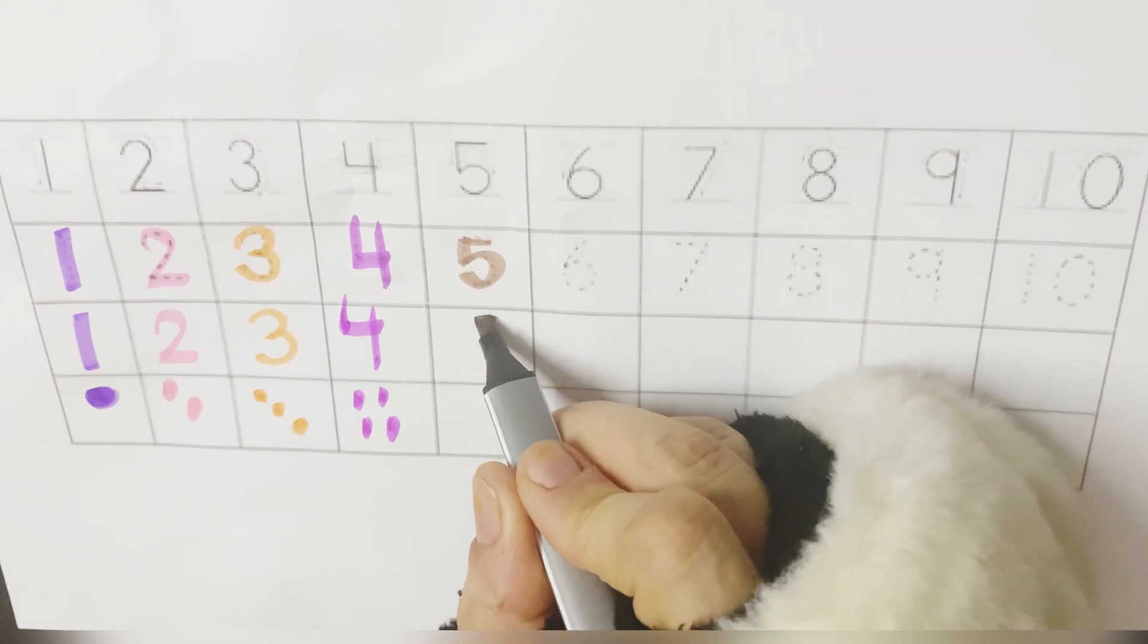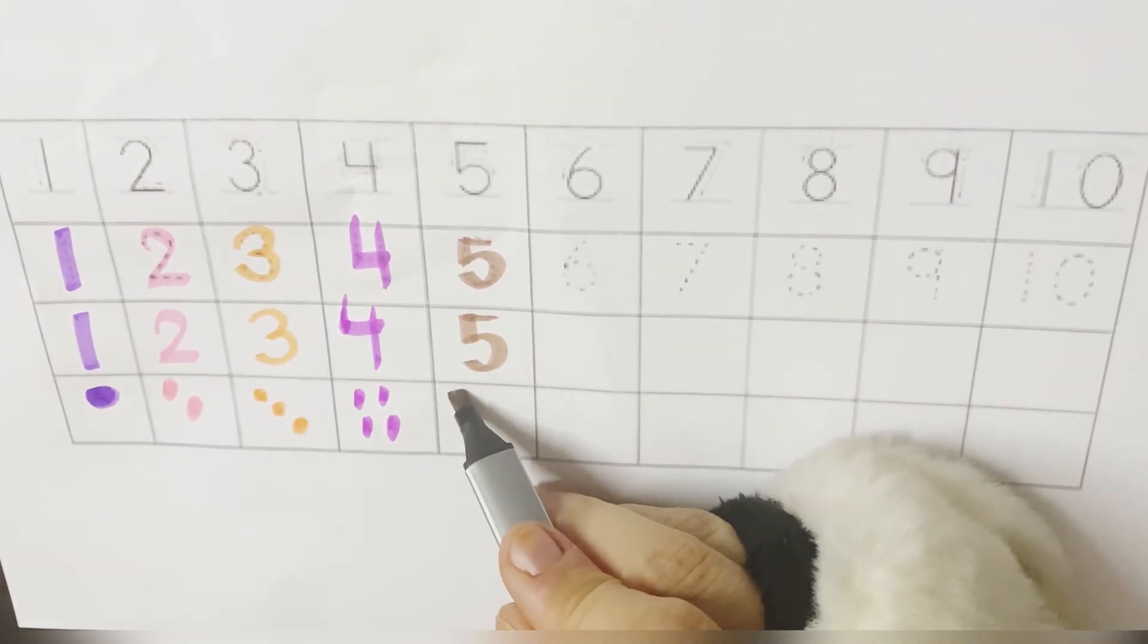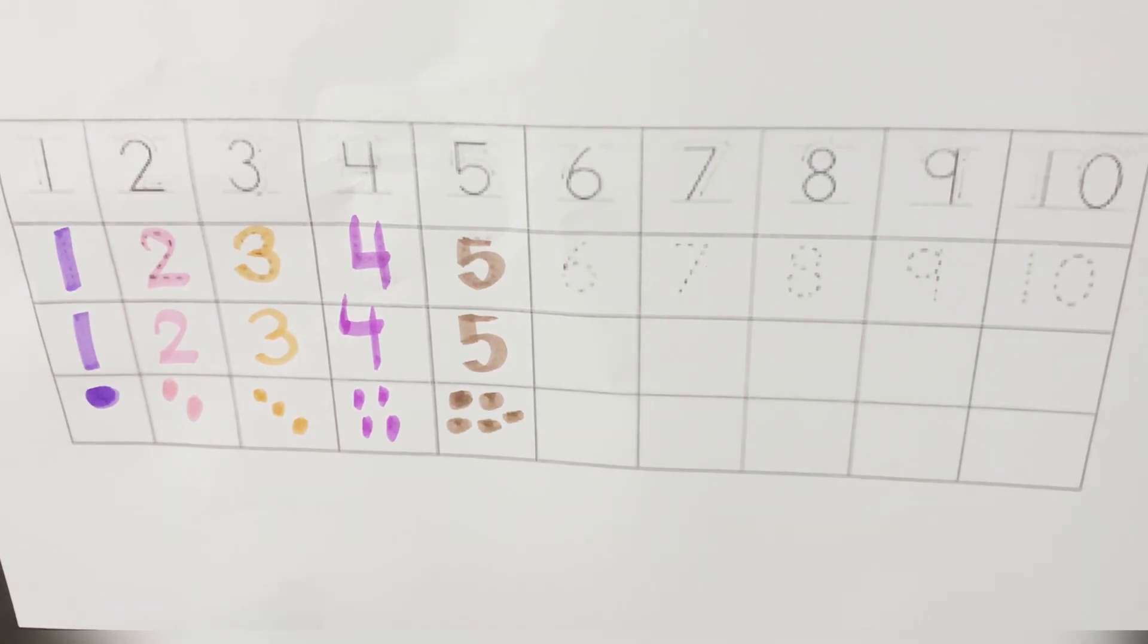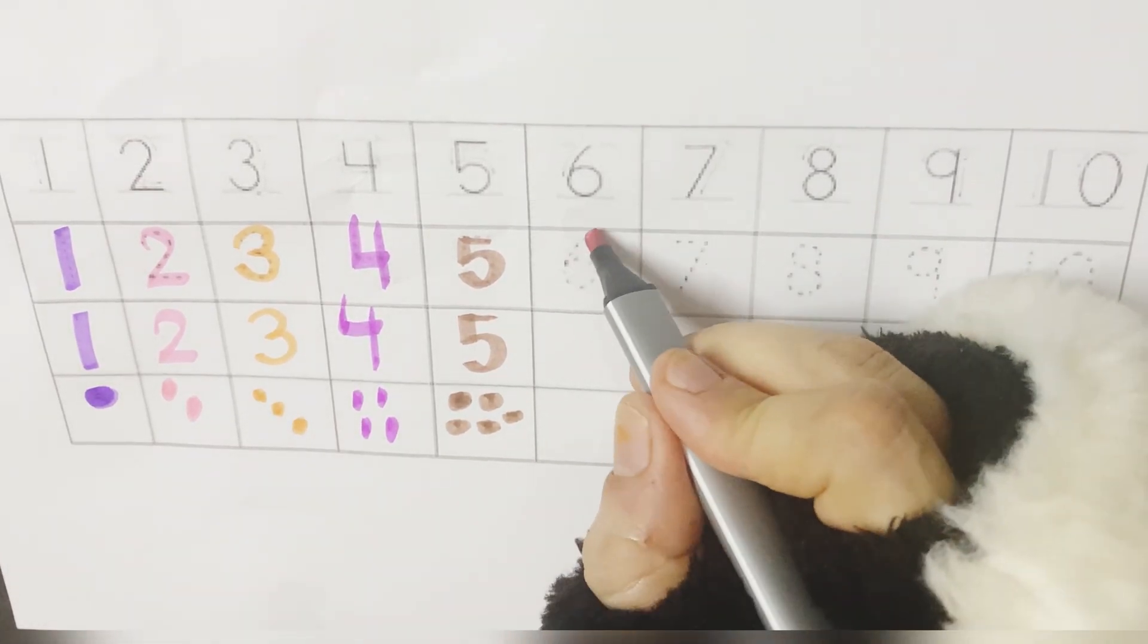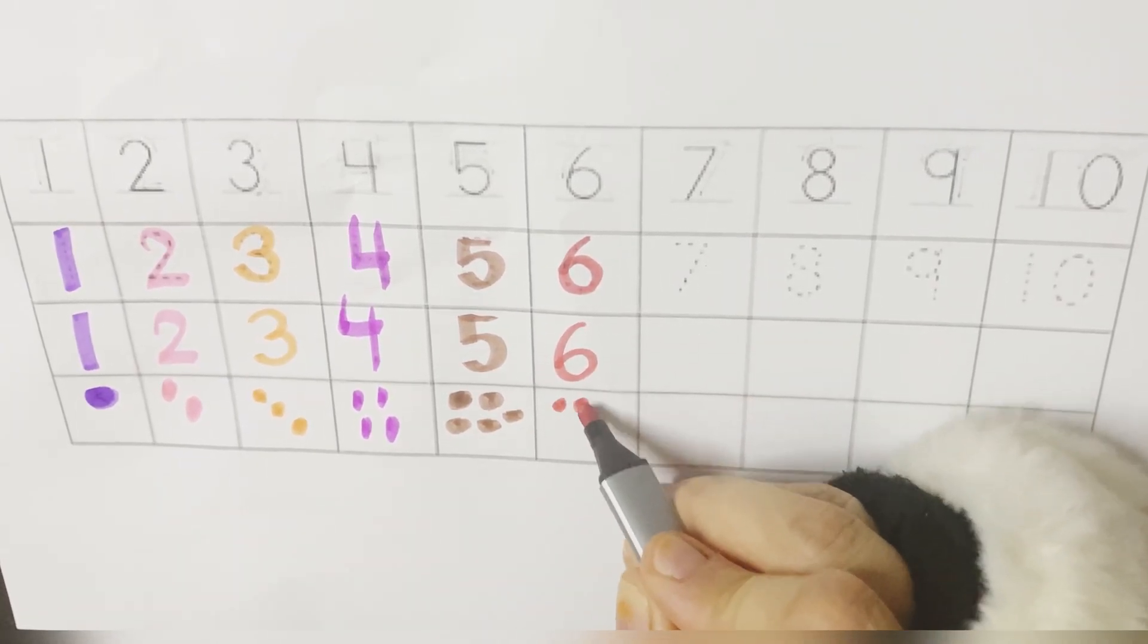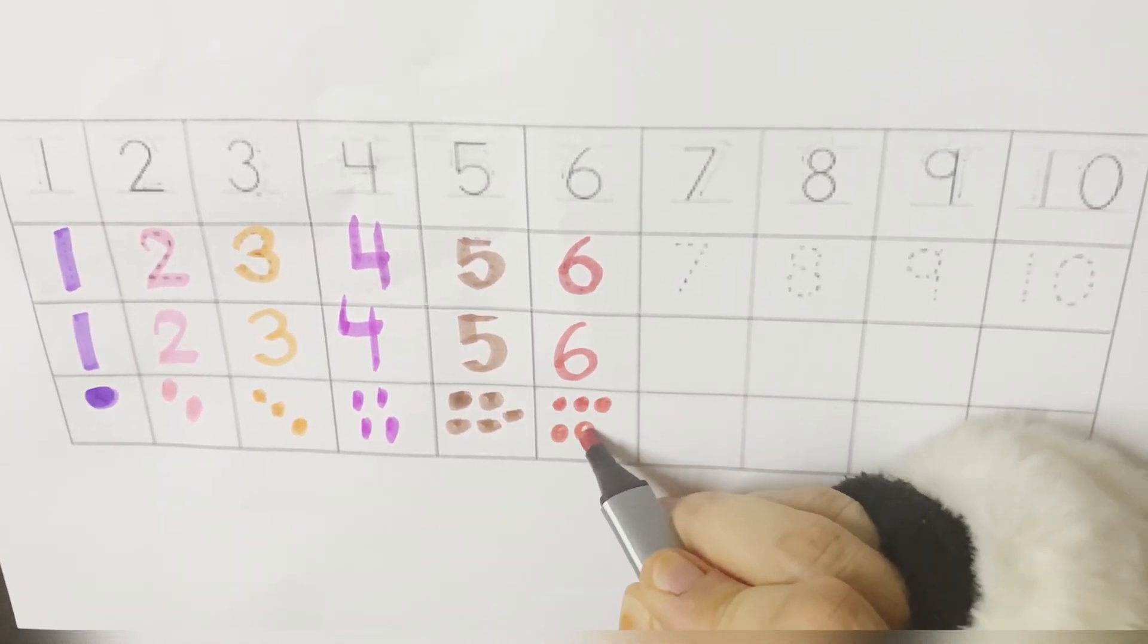What comes after four? Five. Five. So let's draw five dots. One, two, three, four, and five. What comes after five? Six. Six. One, two, three, four, five, and six.